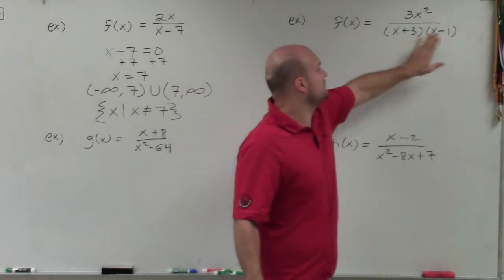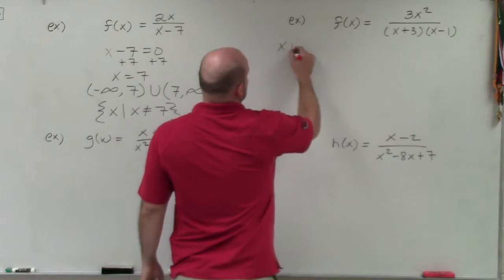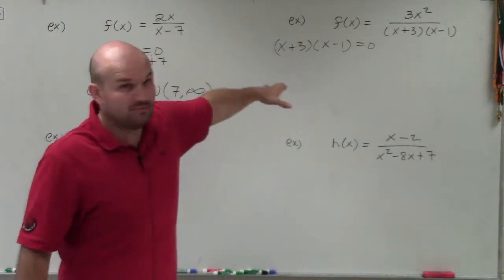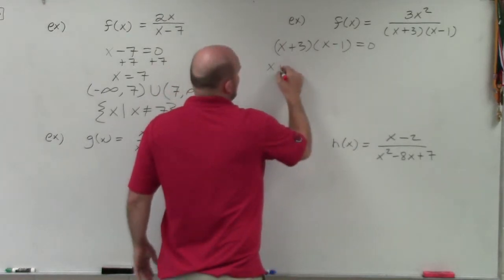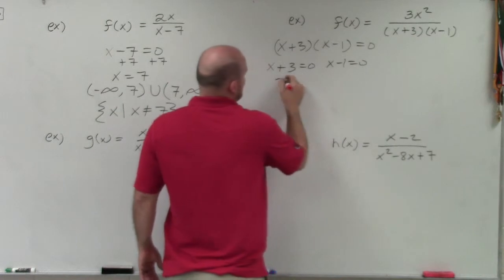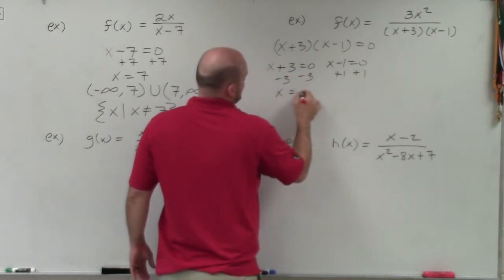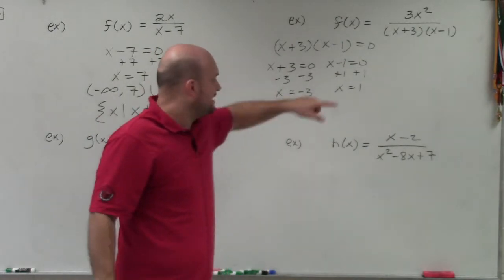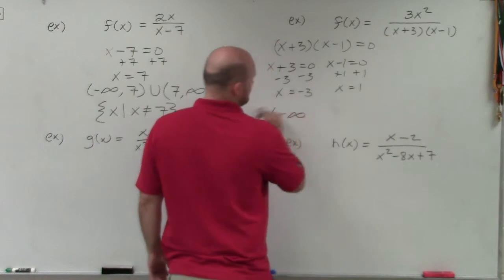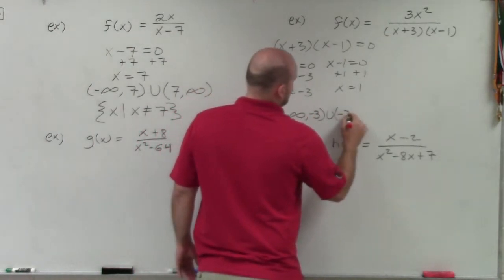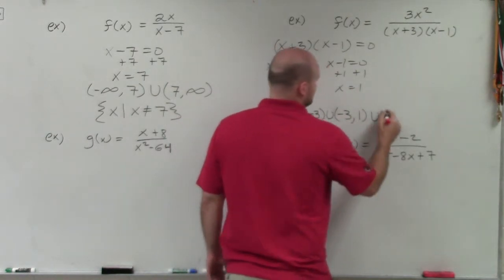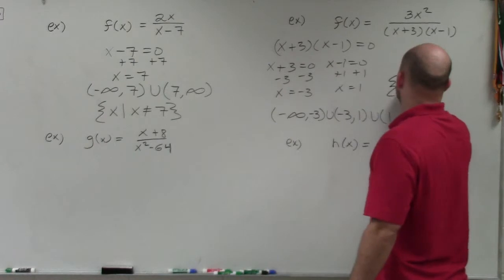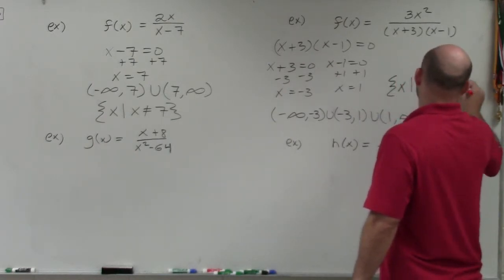Now we have the product of two binomials in the denominator. Setting x plus 3 times x minus 1 equal to 0 and applying the zero product property: x plus 3 equals 0 or x minus 1 equals 0. Solving gives x equals negative 3 and x equals 1. Therefore, all real numbers are part of the domain except negative 3 and 1.